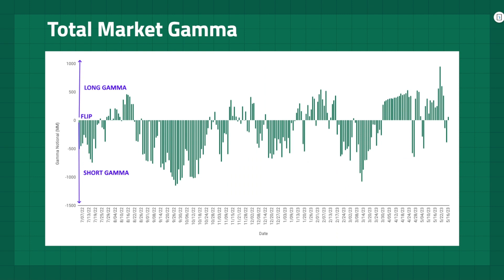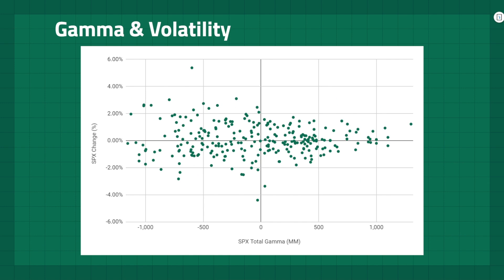This chart represents the total market gamma, looking at the gamma for all options at all available strikes, calculated on a notional basis from a dealer's perspective. Each day we can see whether dealers are long gamma or short gamma and to what extent on the y-axis, with each bar representing a day. To illustrate the difference in volatility from positive to negative gamma, comparing total gamma against the SPX close-to-close percentage change, we can see the higher the positive gamma the lower the volatility, whereas the higher the negative gamma the more volatility and the wider the distribution of returns.